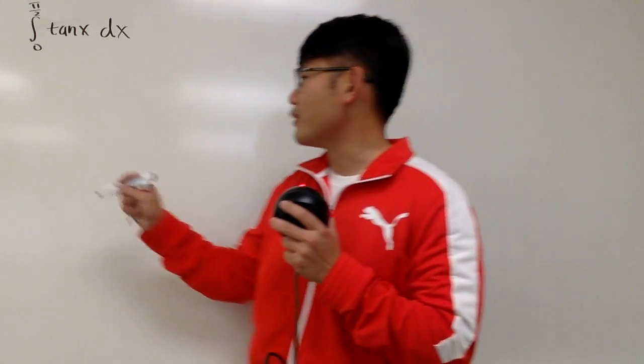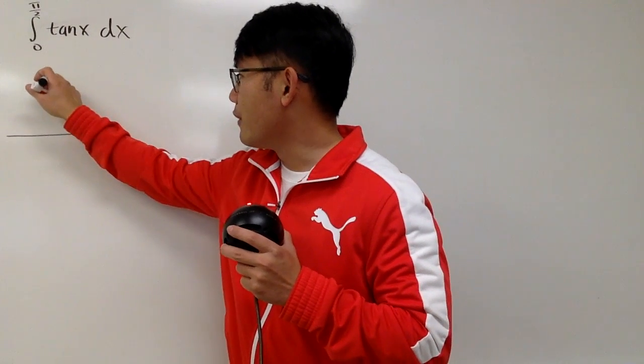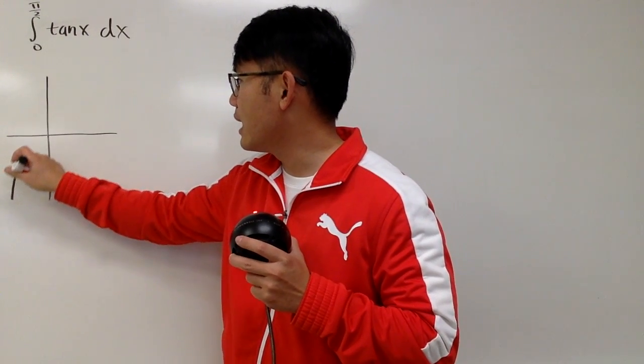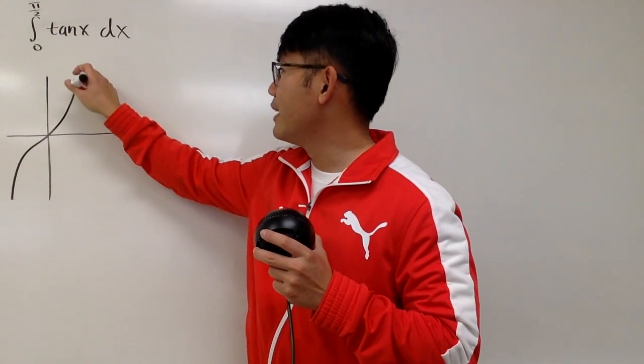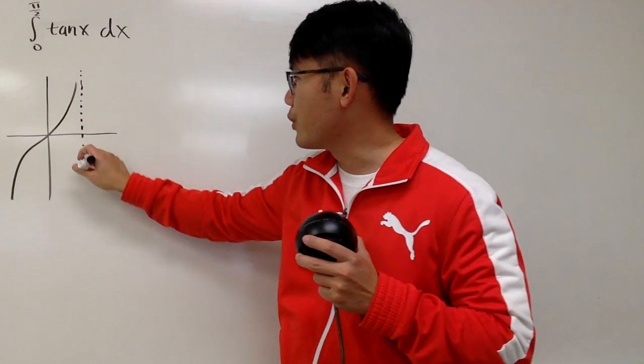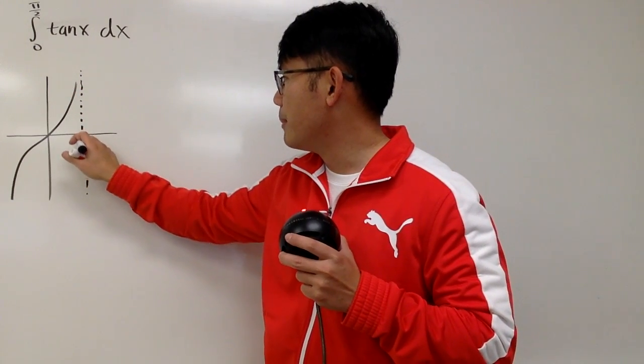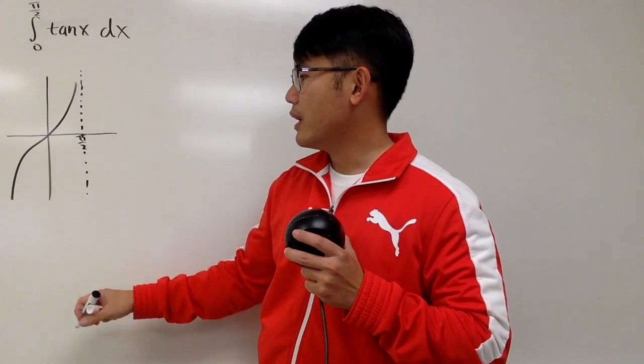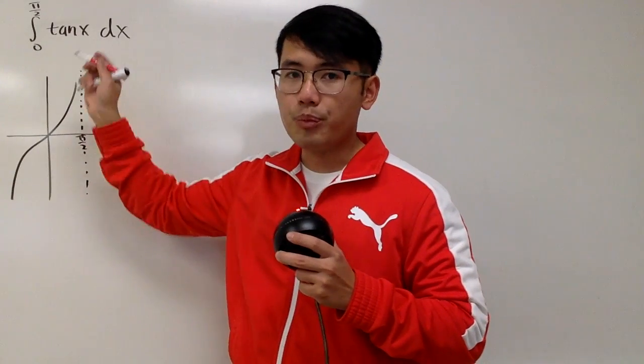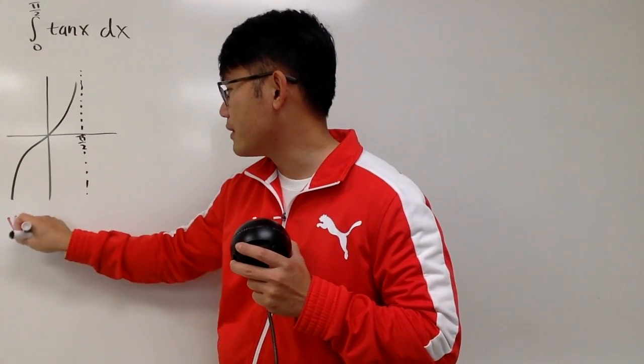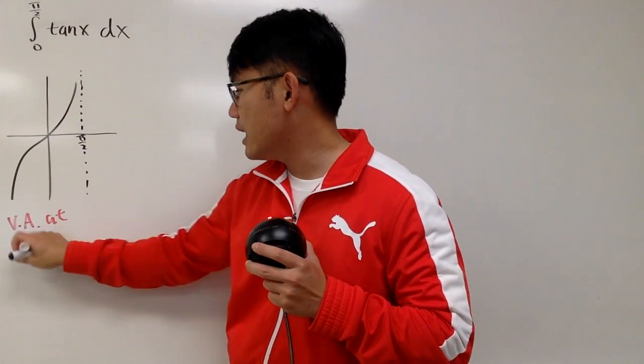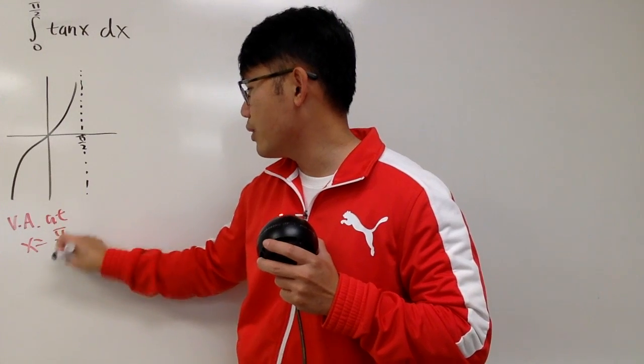And let me show you guys the picture right here. The graph of tangent x, of course, it looks like this, and then you do have that vertical asymptote when you have x being pi over 2. Well, again, this is improper because you have a vertical asymptote at x equals pi over 2.